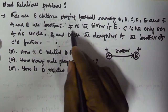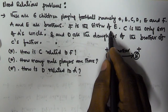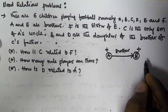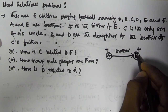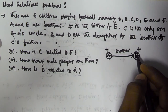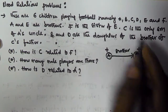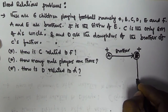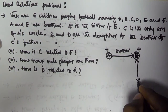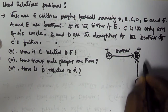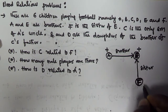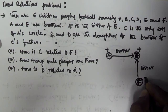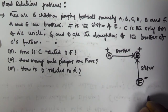Next, F is the sister of E. So F is a female, and I am representing that with a negative sign.